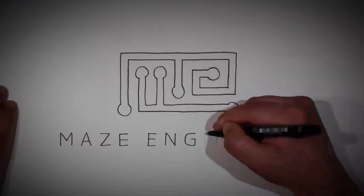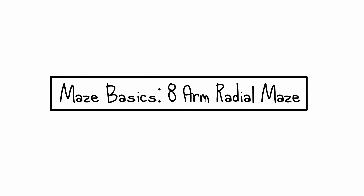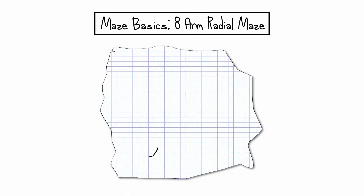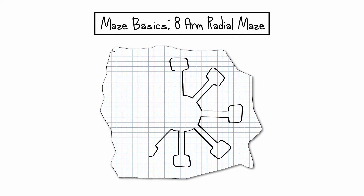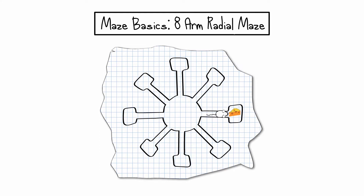Welcome to Maze Engineers. The 8-Arm Radial Maze has 8 arms connected to a center. A mouse sits in the center and tries to find food by exploring the arms of the maze. After each choice, the mouse must return to the center and wait.